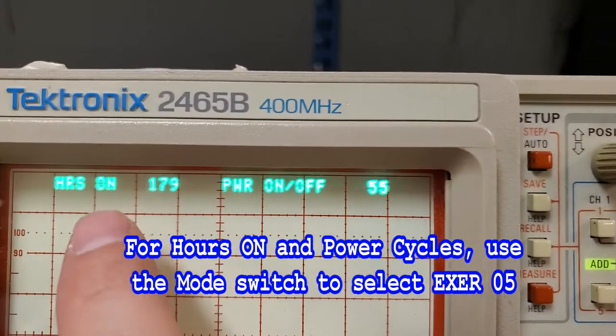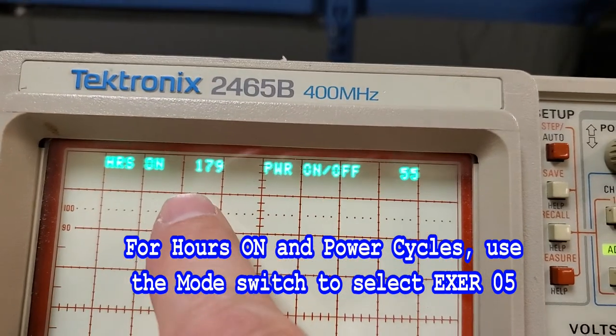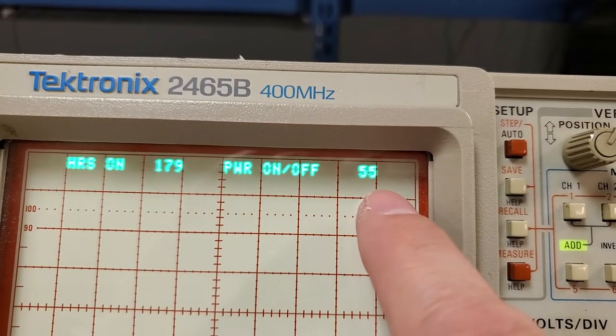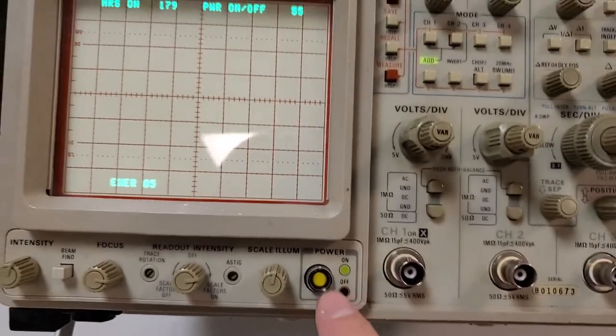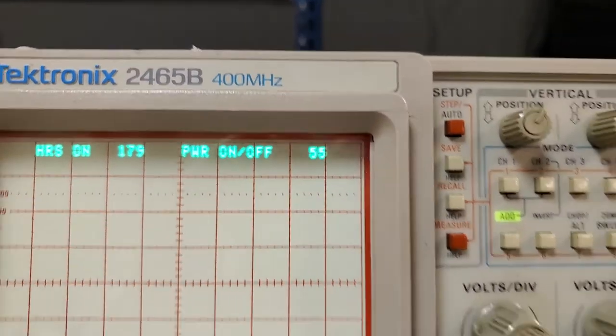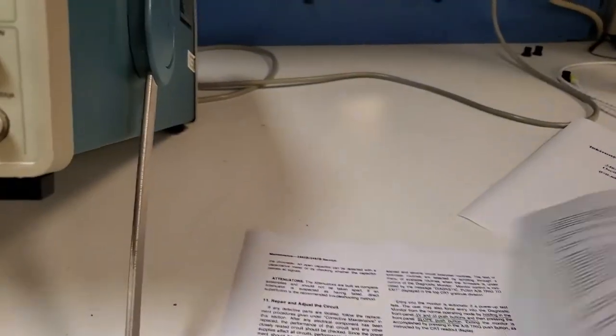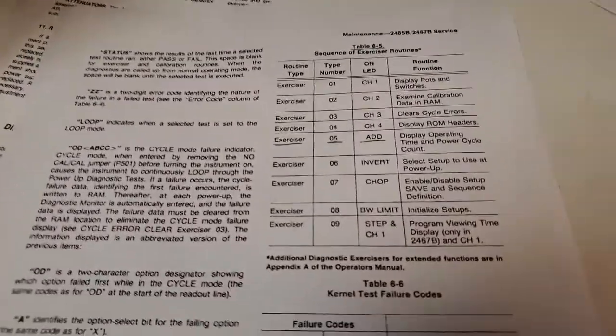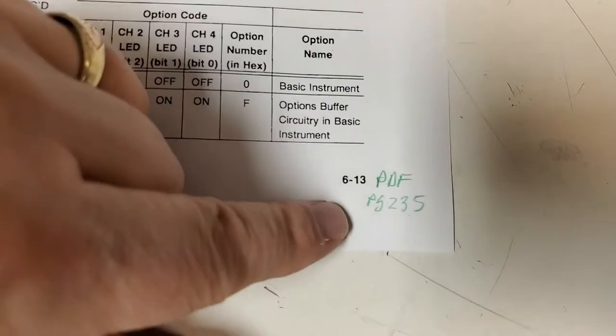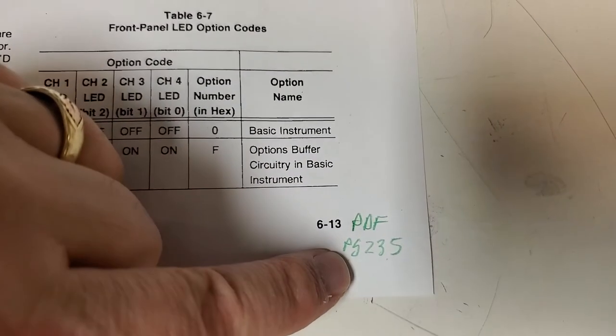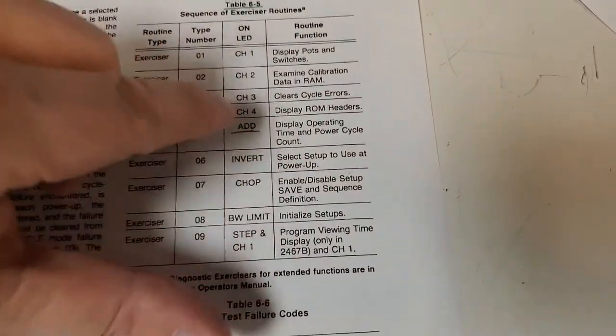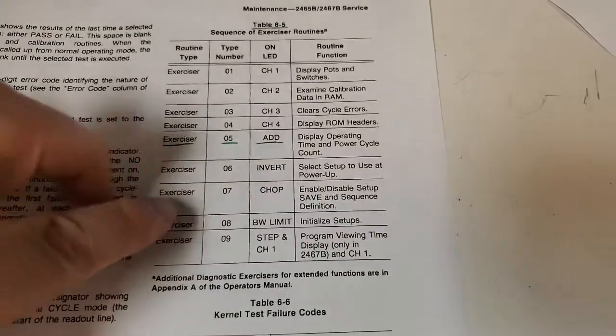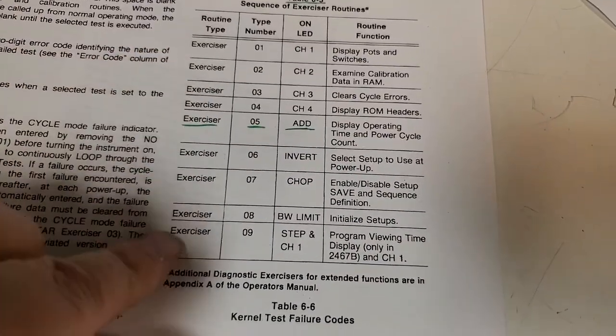So you select that and then you hit the upper coupling button to start the test. And there you are - hours on: 179. Power on and off cycles, that's the number of times the pushbutton's been turned on and off, is 55 times. You can find out what the exercise tests are on page 6-test-13, or 235 in the PDF. Here's the exercises right here.